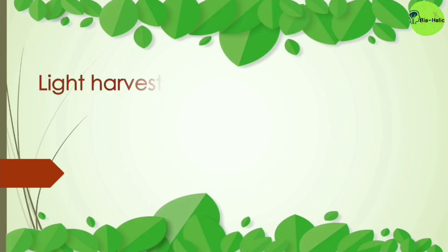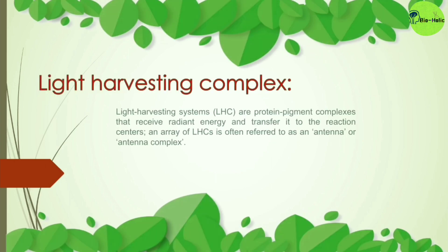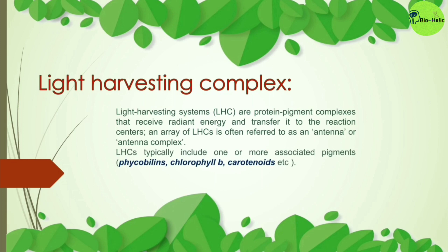The light harvesting complex, or LHC, consists of protein-pigment complexes that receive radiant energy directly from the sun and transfer it to the reaction centers. The area of the LHC is often referred to as an antenna or antenna complex. The light harvesting complex typically includes one or more associated pigments such as phycobilins, chlorophyll b, and carotenoids.